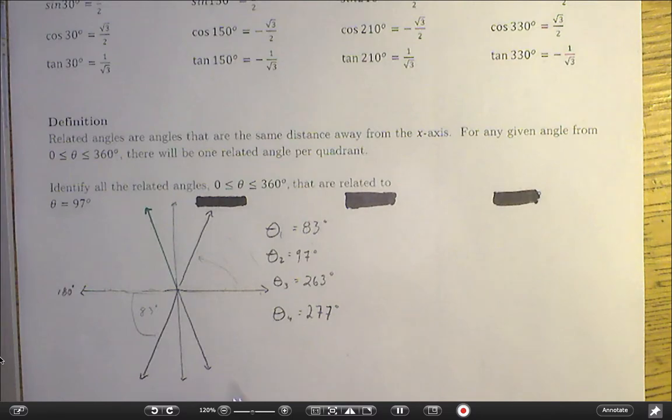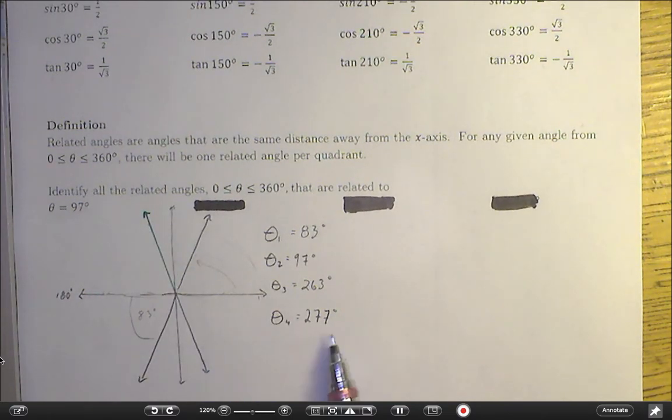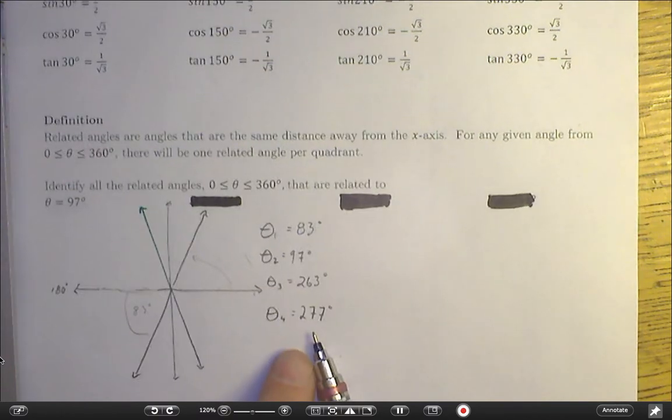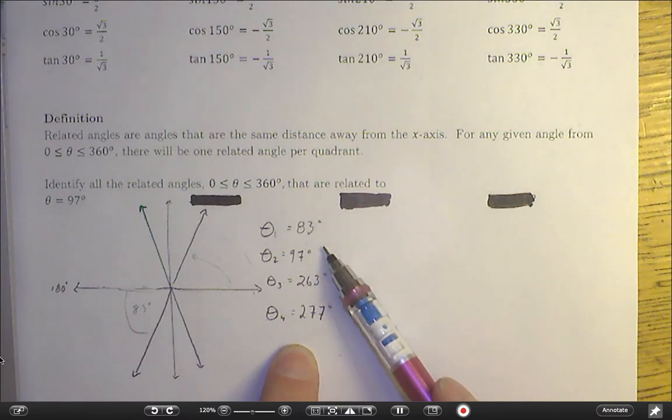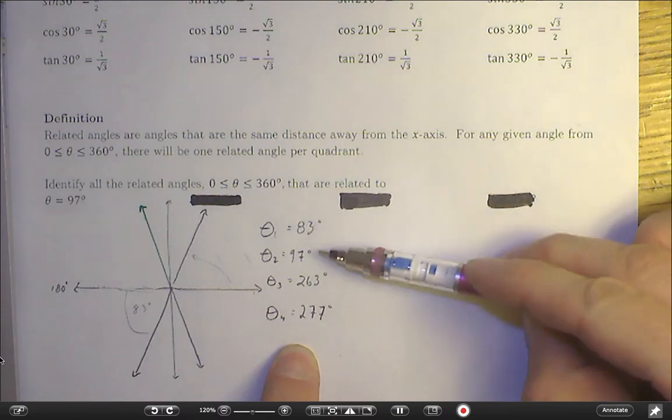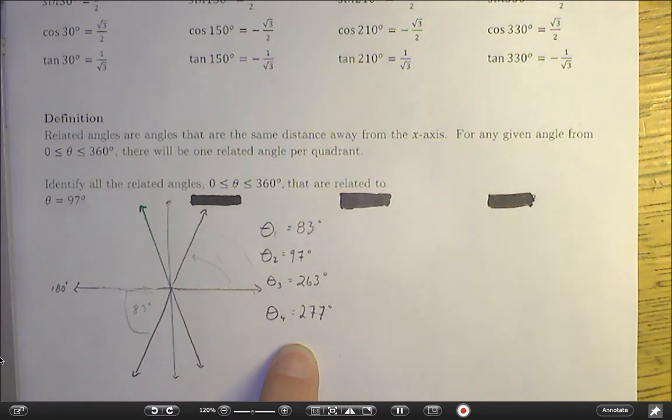So 360 minus 83 is 277. At the moment, we have identified all related angles to 97 degrees between 0 and 360, because there is one per quadrant. If you notice, each of these angles is exactly 83 degrees away from the closest x-axis.